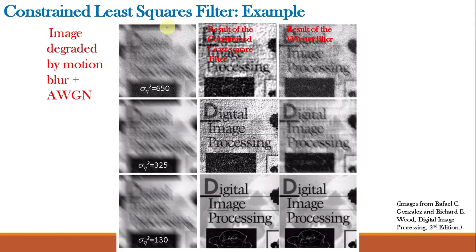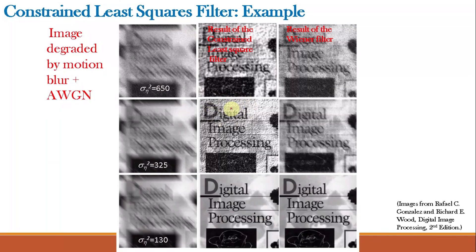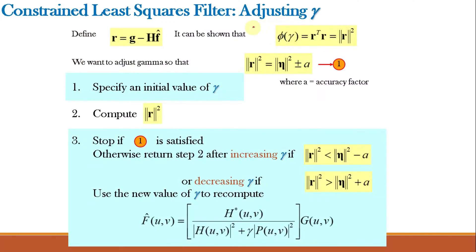Using an example test image, let us understand the performance of the CLS filter versus the MMSE or Wiener filter. The test image is degraded by motion blur as well as Gaussian noise with variances of 650, 325, and 130. When noise is very high (variance 650), the result of the CLS filter is better compared to the Wiener filter — the image is clearer. At noise variance 325, the CLS filter still performs better. When noise variance is 130, the results of CLS filter and Wiener filter are almost the same. This shows that the CLS filter performs better when noise is higher, and when noise is low both perform almost equally.